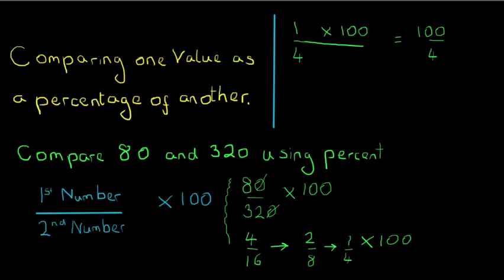Now I'll remind you how to turn any fraction into the final answer: knock it over and do the division, so I've got to work out 4 into 100. 4 into 1 doesn't go, so 4 into 10 goes twice remainder 2, and then 4 into 20 is 5. In other words, comparing 80 and 320 using percent, the answer is 25 percent.